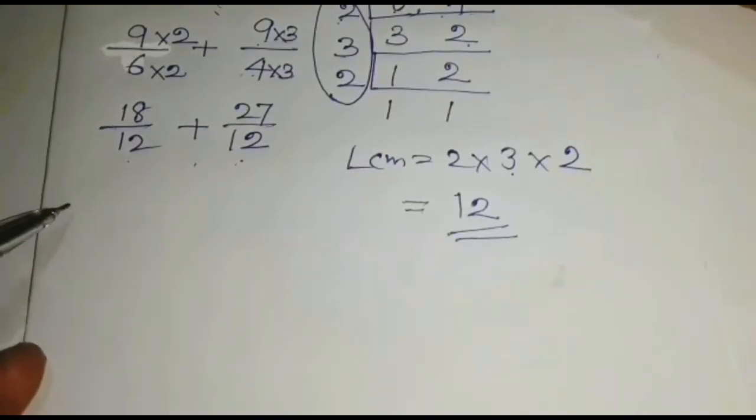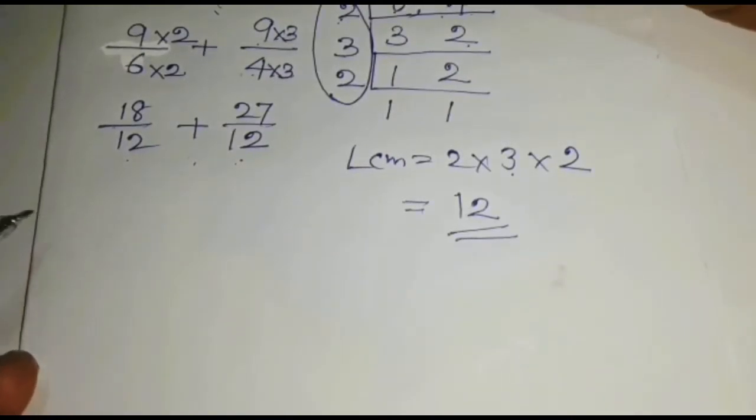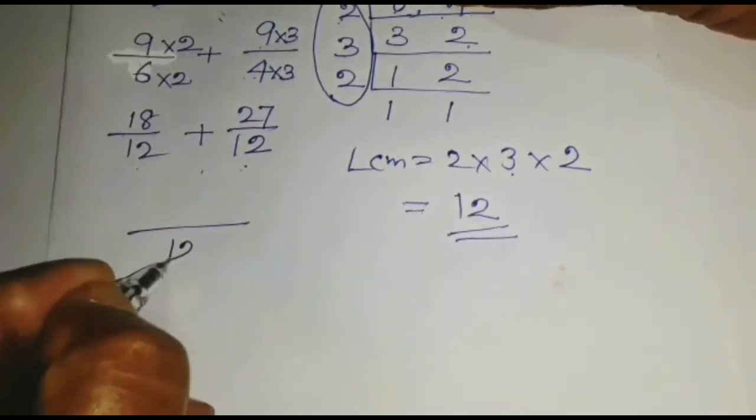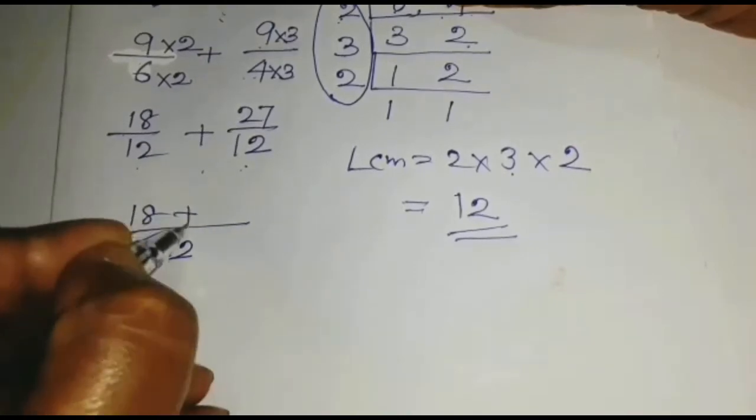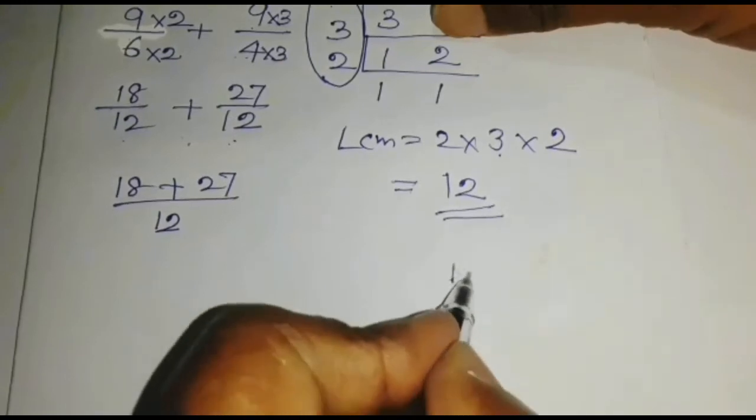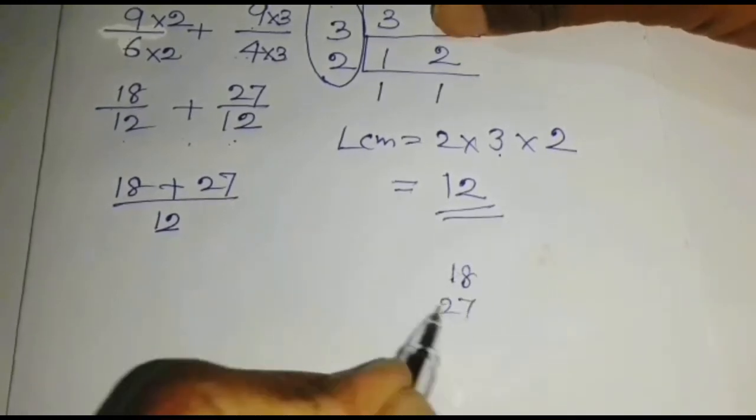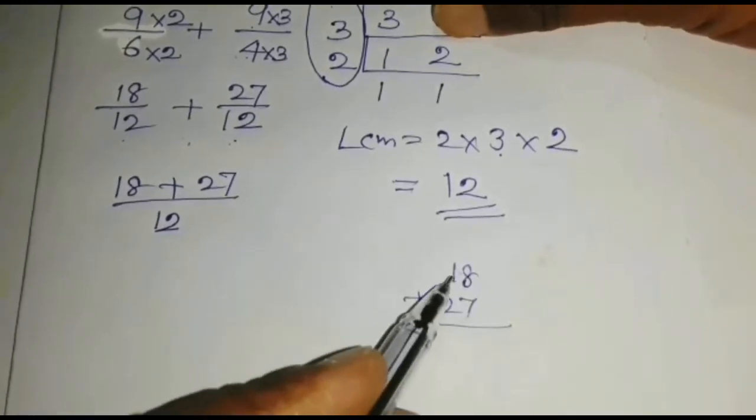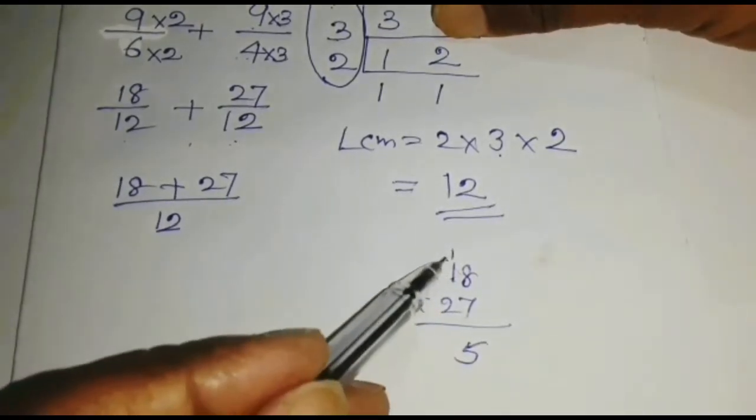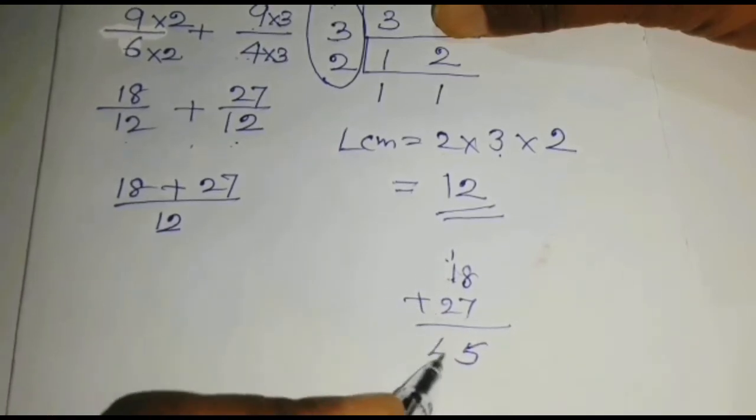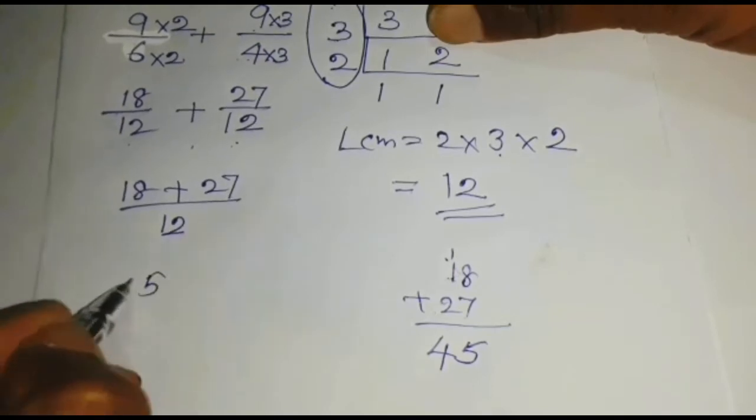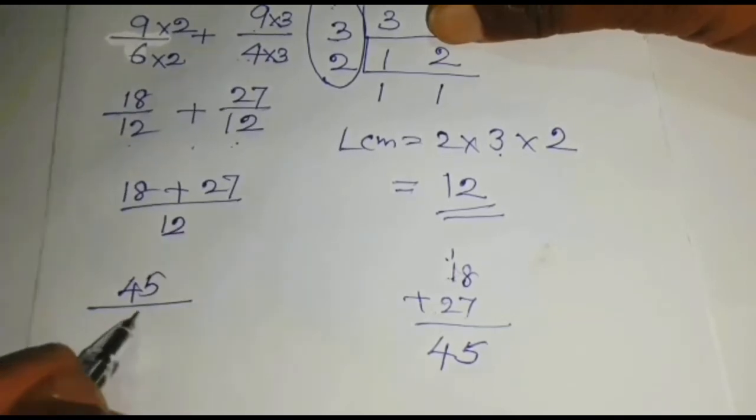Now, we can add these two fractions because denominators are equal. But we are not adding denominator, that is 12. We have to add only the numerator, 18 plus 27. Then, 18 plus 27. 8 plus 7 is 15. 1 balance. 1 plus 1 is 2. Then plus 2 is 4. Answer is 45 over 12.